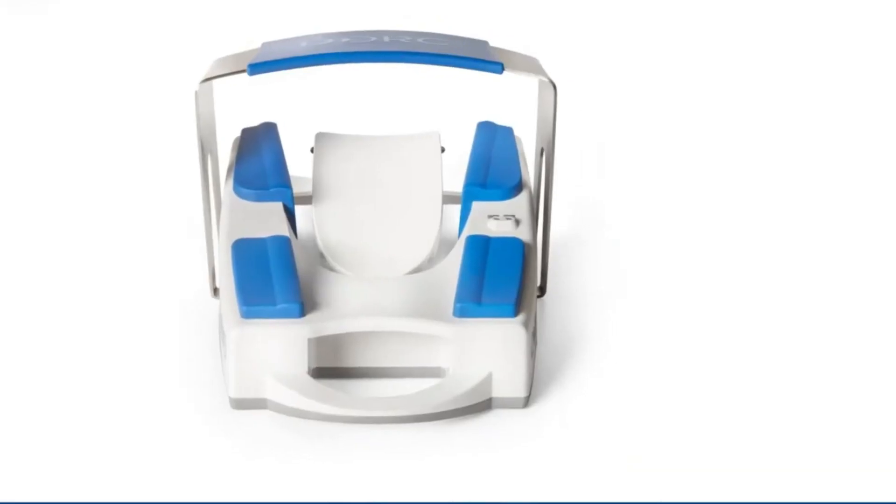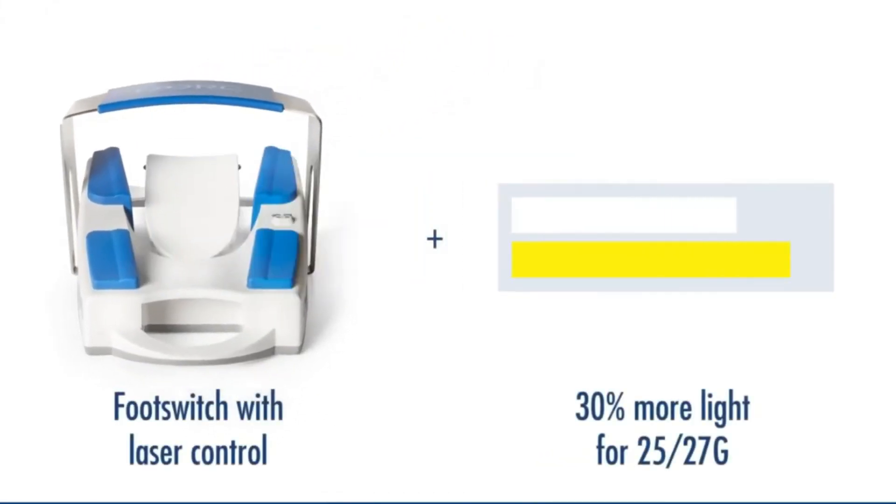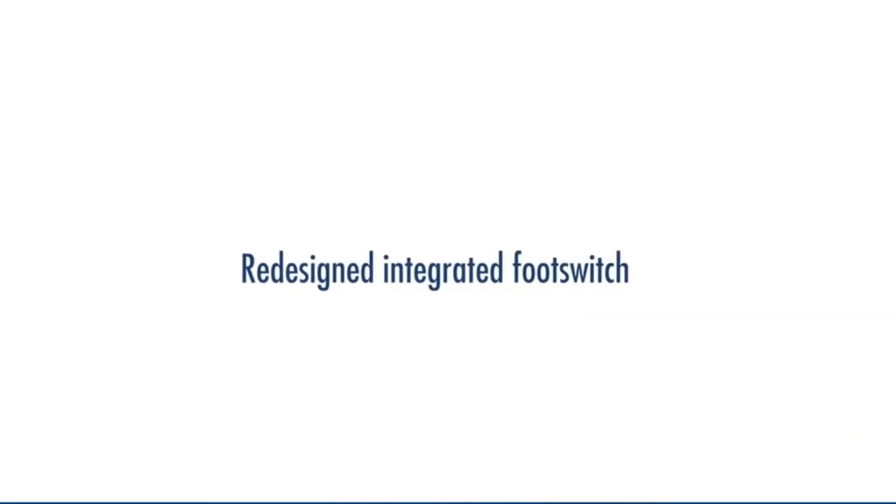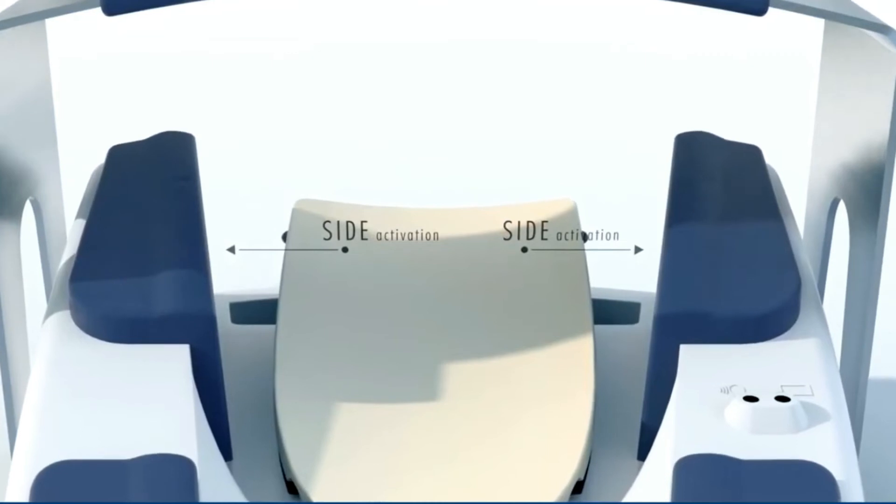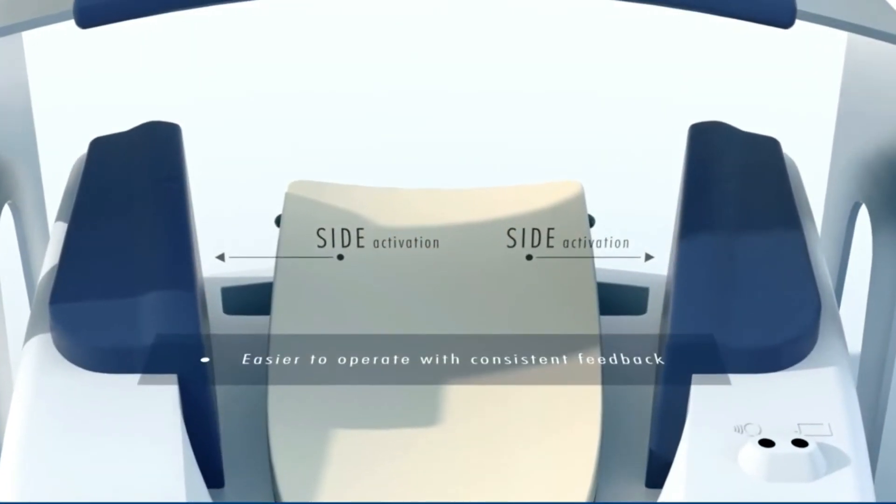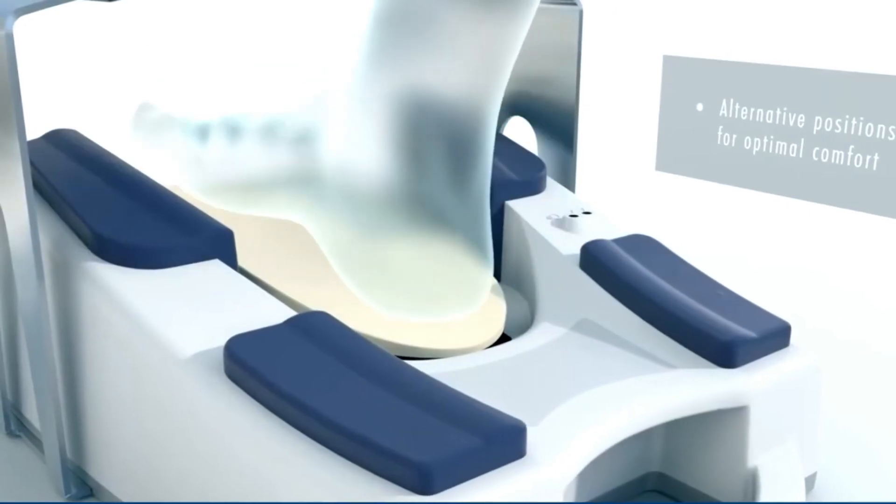The fifth component is the foot switch. Phaco emulsification is a form of cataract surgery that uses a foot switch to control the irrigation, aspiration, and ultrasonic power delivery to a probe that breaks up and removes the cataract from your eye.